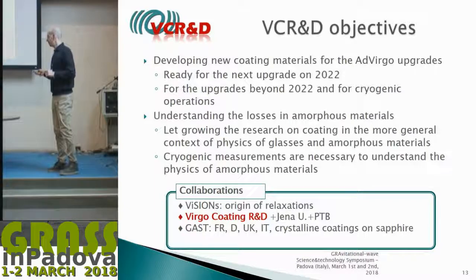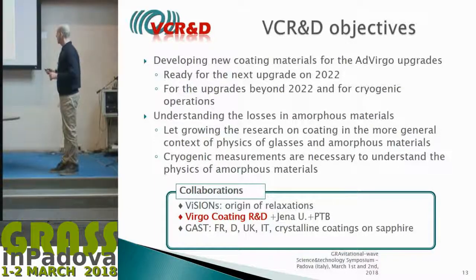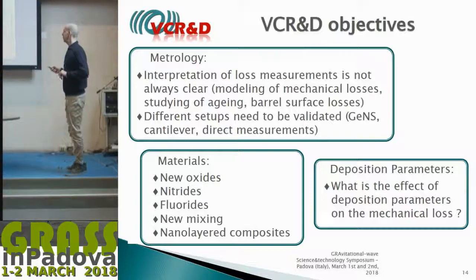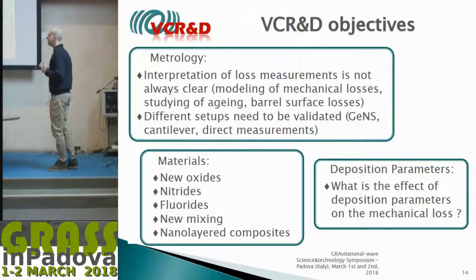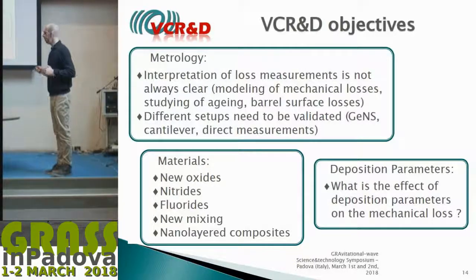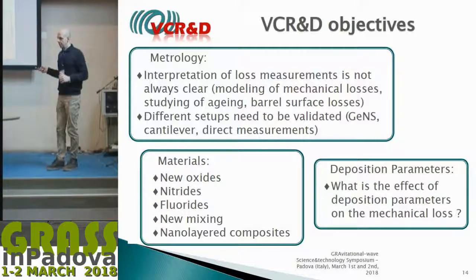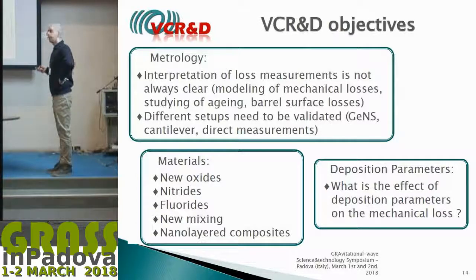There is also a European project on crystalline coatings ongoing within the collaboration. The objectives include a metrology part for strong interpretation of loss measurements across all substrates—this is important because in silica, for example, there are issues with aging and reproducibility of polished barrel surfaces. New materials are being studied: oxides, nitrides, fluorides, mixings, and nano-layered composites. A dedicated study will optimize deposition parameters during coating production.